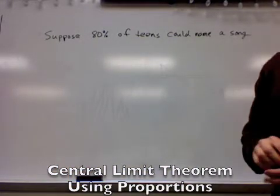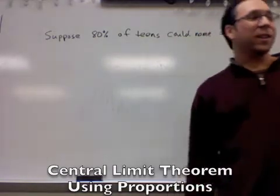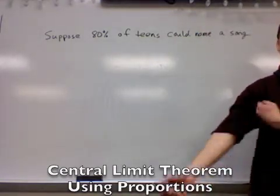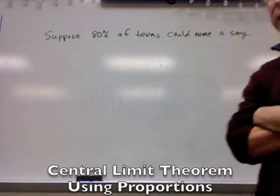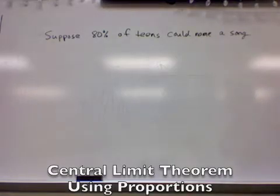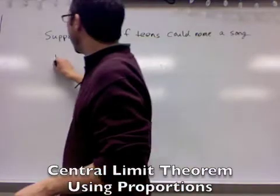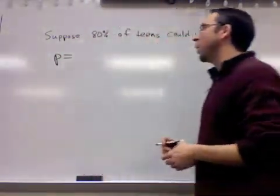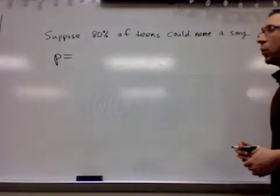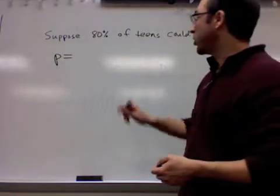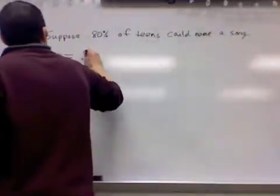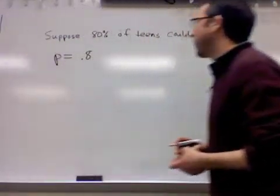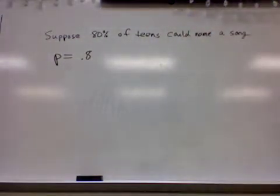Hannah Montana, or Miley Cyrus, whatever you want to call her. Let's suppose that 80% of teens could name a song that she sings. Statistically, what are we given? We're given that P, which is the population proportion, is 0.8. That's out of all teens. That's a parameter.